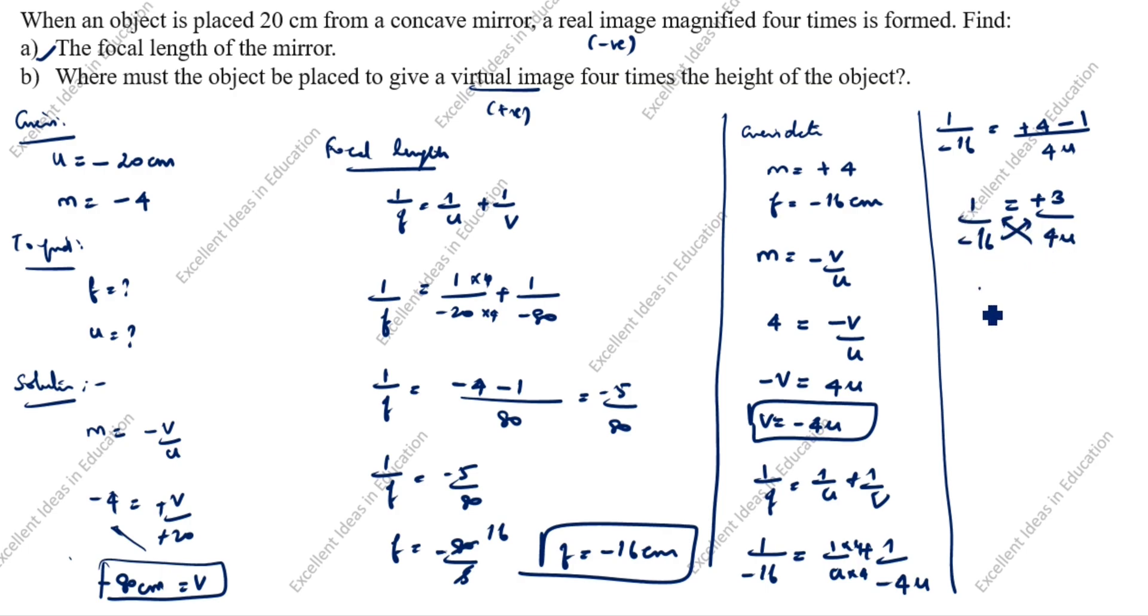Cross multiply: 4u is equal to 3 into minus 16. u is equal to 3 into minus 16 divided by 4. 1 fours are 4, 4 fours are 16. u is equal to 4 threes are 12. Already minus is there, take it minus centimeter.